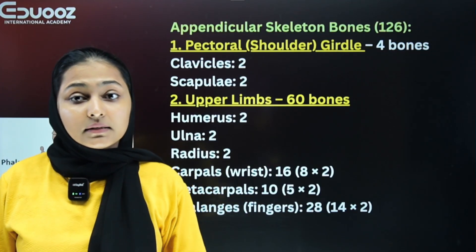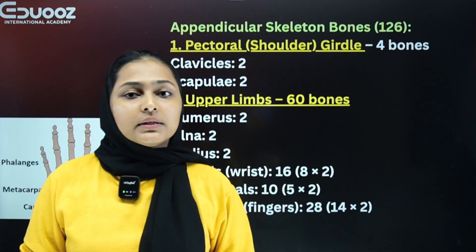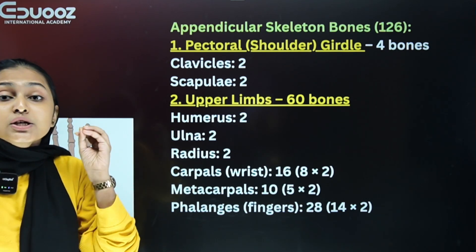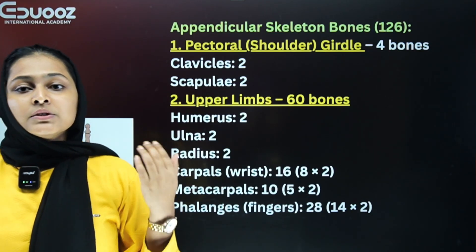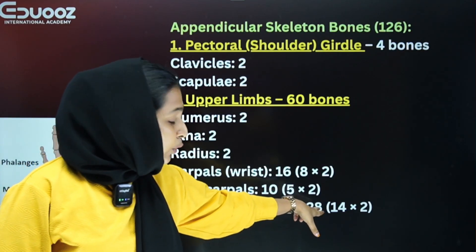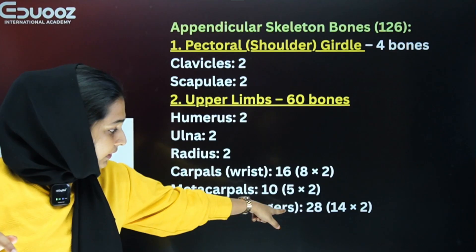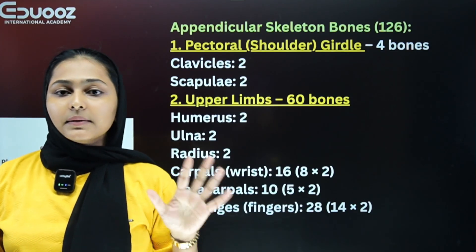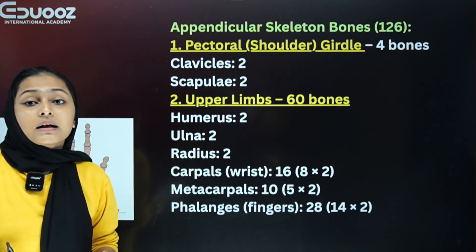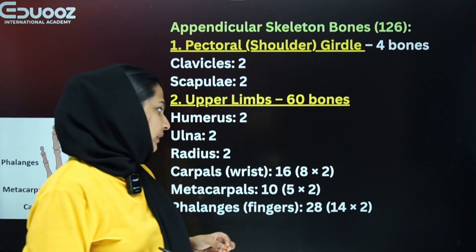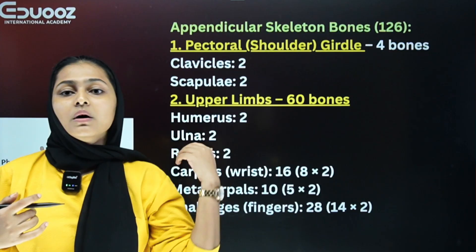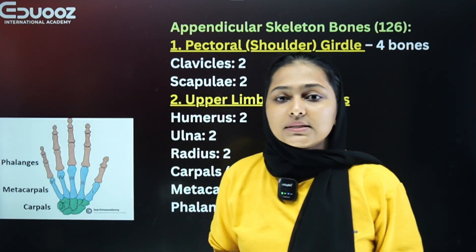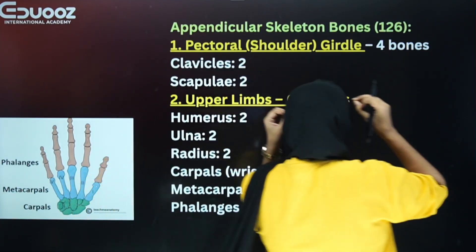Metacarpals are 10 (5 per hand). Phalanges — fingers and bones — total 28 (14 per hand). The humerus counts as 2 (one per arm), radius and ulna together are 4. So the upper limb bones total 60 for both sides.